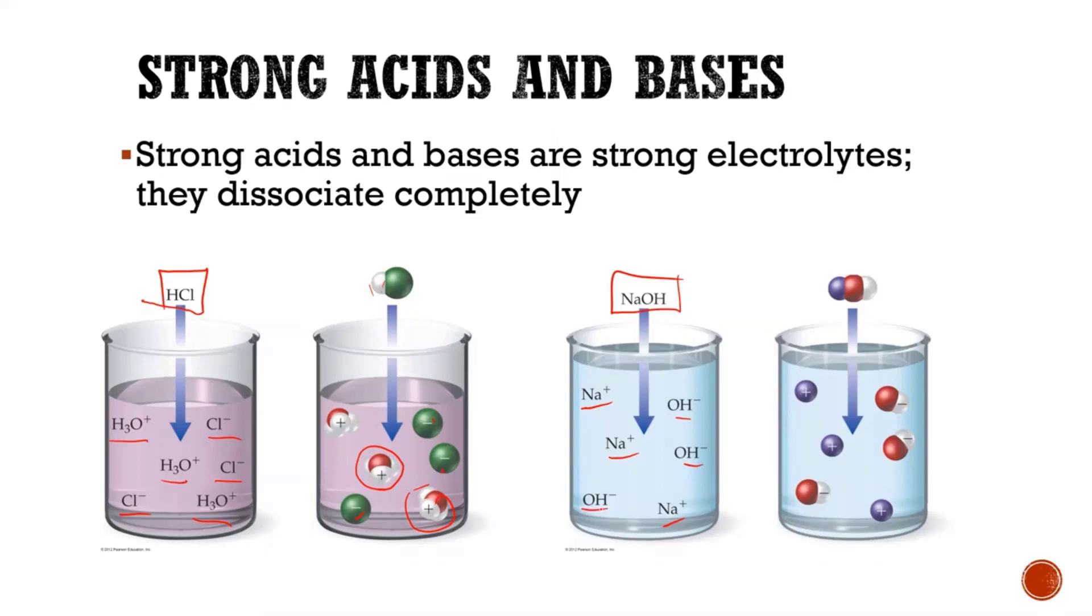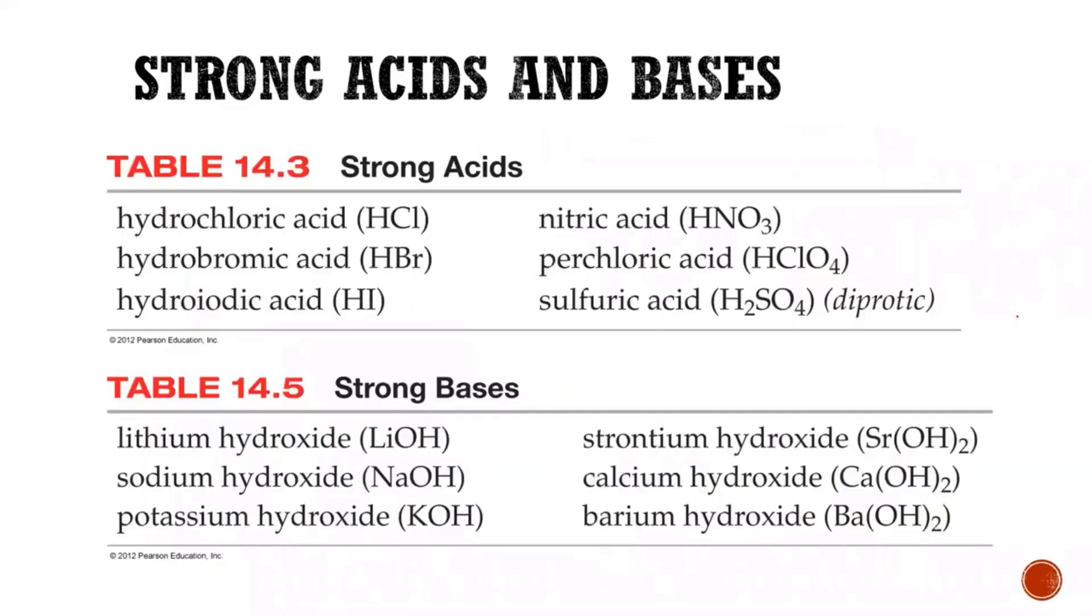So again, strong acids and bases, 100% dissociation. So there is a large concentration of ions. If there's a large concentration of ions, that makes it a strong electrolyte because the strength of an electrolyte is based on the concentration of ions.